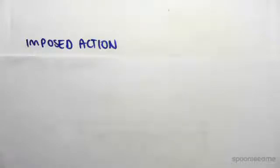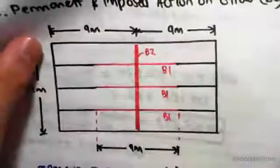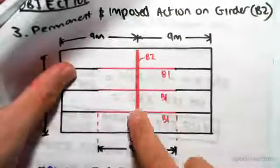So just to show you where we're at, we're once again finding the imposed action now on the girder. So if we flip back to the section that we're looking at, we have this section here, we're looking at the imposed action along B2.